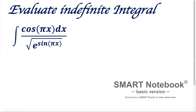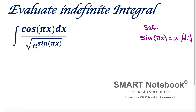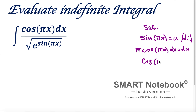First, let's substitute sine(πx). We set u equal to sine(πx). Differentiating both sides of this substitution and applying the chain rule: the derivative of πx is π, and the derivative of sine(πx) is cosine(πx). So π·cosine(πx) dx equals du. Dividing everything by π gives us cosine(πx) dx equals du over π.